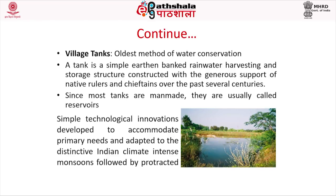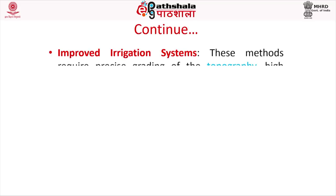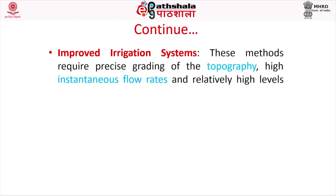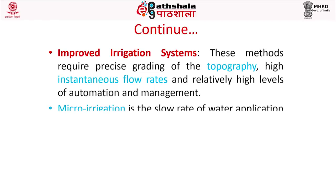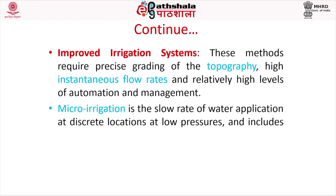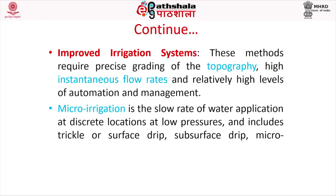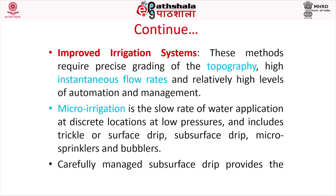Improved irrigation systems require precise grading of topography, high instantaneous flow rates, and relatively high levels of automation and management. Micro irrigation is the slow-rate application of water at discrete locations at low pressure, and includes trickle or surface drip, surface and subsurface drip, micro sprinklers, and bubblers. Carefully managed subsurface drip provides the greatest potential for water conservation.